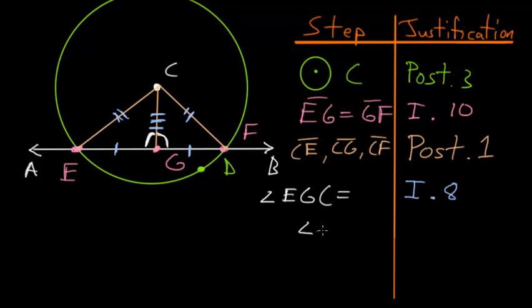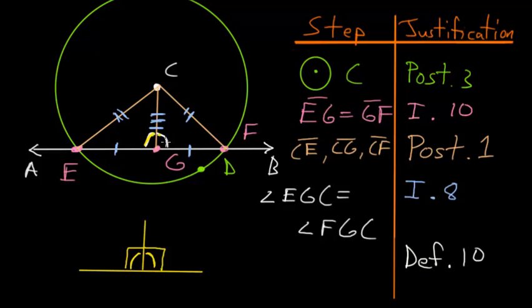And if we take a look at definition number 10 of Euclid's 23 definitions, we know that if we have two lines where one line is coming off the other line essentially like this, and if this angle here and this angle here are equal to each other, then we know that both of these angles are right angles and the two lines are perpendicular. And since in our case these two angles are equal to each other, we know that both of these angles have to be right angles.